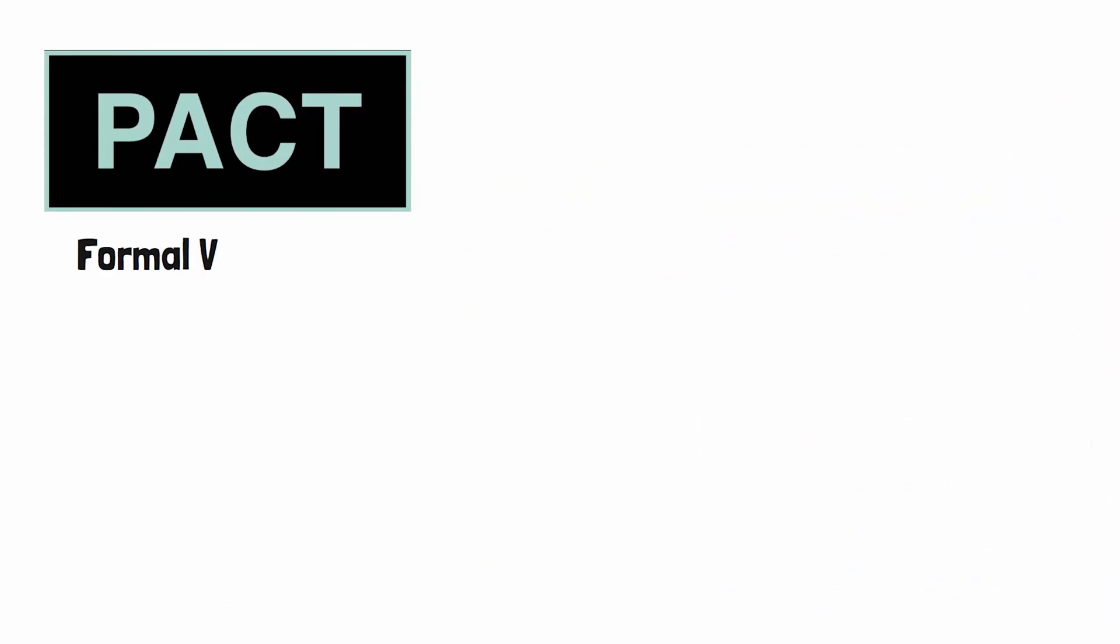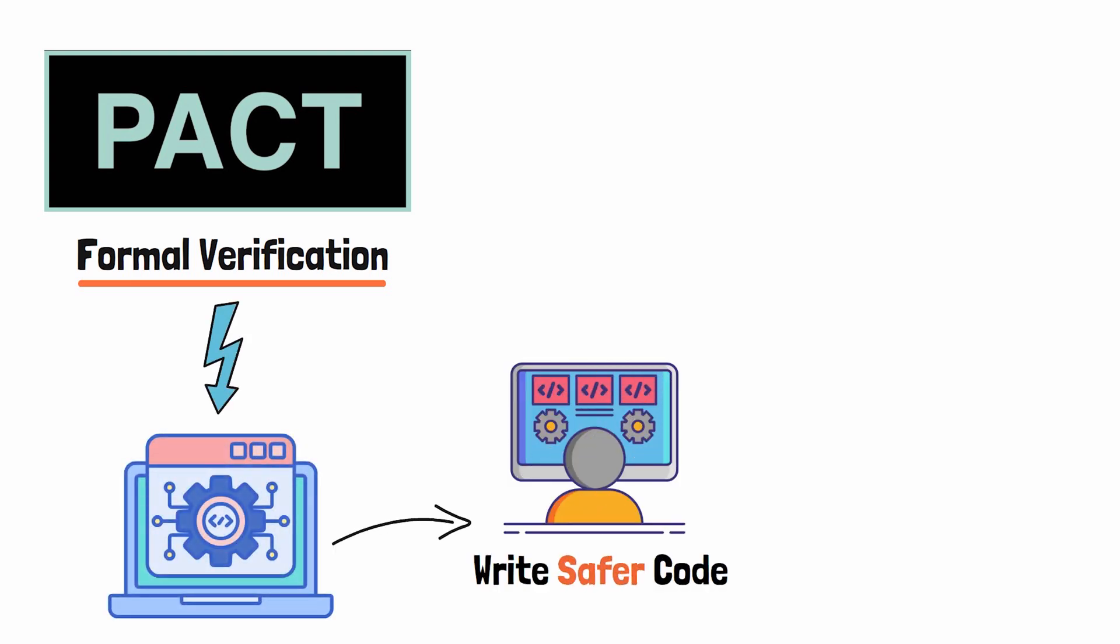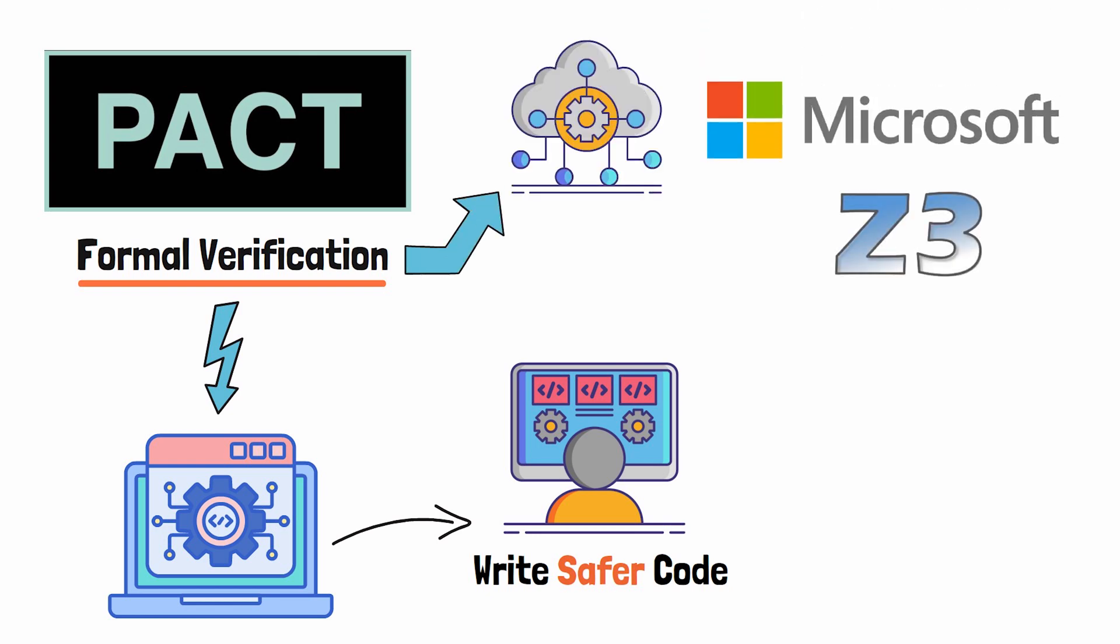Pact also uses what is called formal verification. Formal verification is like a self-auditing software, software designed to help coders write safer code. Formal verification uses technology created by Microsoft called Z3.